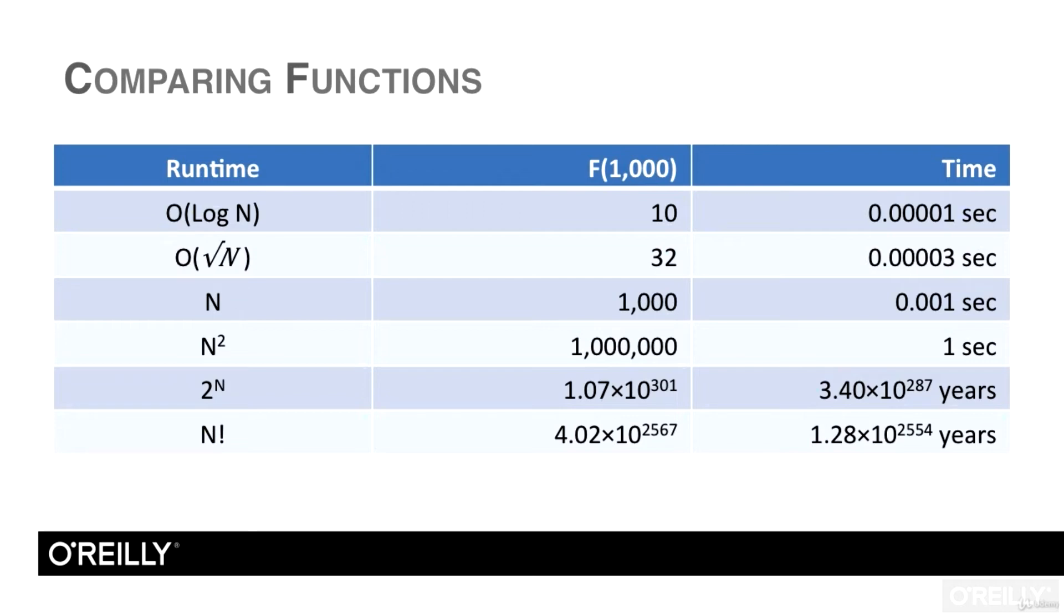For a problem with n equals 1,000, an order n squared algorithm executes 1 million steps, so it will take exactly one second to finish. If you increase the size of the problem, this algorithm will still give you reasonable results up to a point. For example, if n is 1 million, you'll need to wait 1,000 times as long for this algorithm to finish. That's 1,000 seconds or 16 and 2 thirds minutes. You could wait that long to solve an important problem, but it's not fast enough for an interactive program.